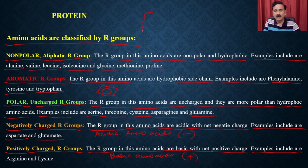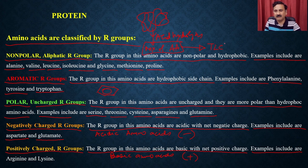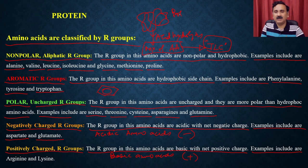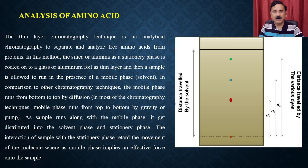When you take a protein and want to identify its constituent amino acids, you can perform acid hydrolysis, which gives you a mixture of amino acids. Once you have this mixture, you can resolve the amino acids using thin-layer chromatography (TLC). TLC gives a spot for each individual amino acid, and from the intensity and number of spots, you can determine the type and quantity of amino acids present.